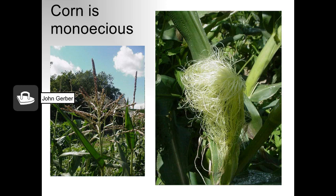Corn is a monoecious plant with incomplete flowers. On the top of the plant is a tassel — the male pollen source. Above the ear there is silk, which represents the stigma. Both are found on the same plant. Monoecious means 'one household' because both male and female are on the same plant.